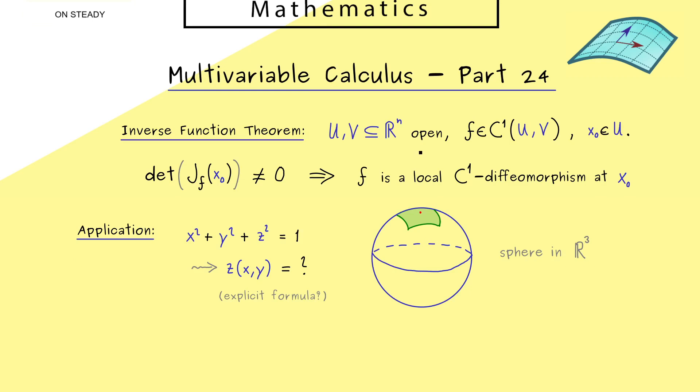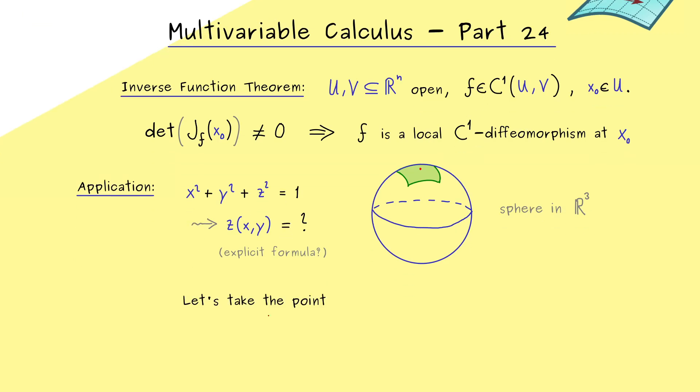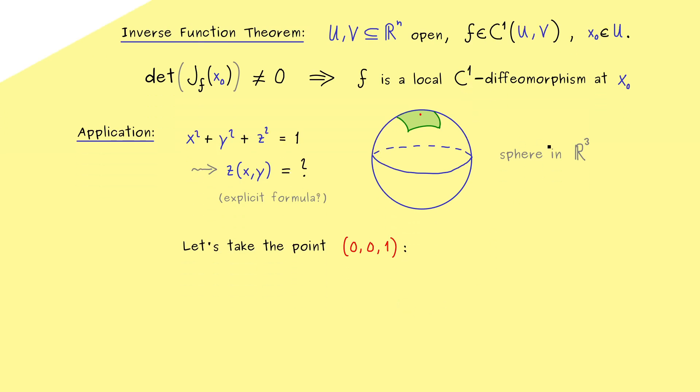And then for this function f, we want to find a local C¹ diffeomorphism at the point (0,0,1). And now the whole thing can only make sense if the function f sends ℝ³ to ℝ³. In other words, our C¹ function here needs three variables as an input. So we have x, y, z for the inputs, but we also need three variables as an output.